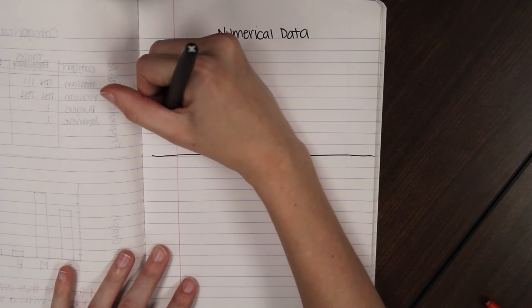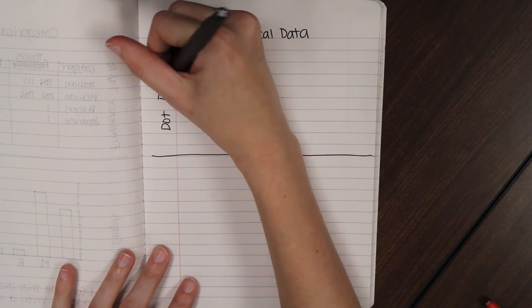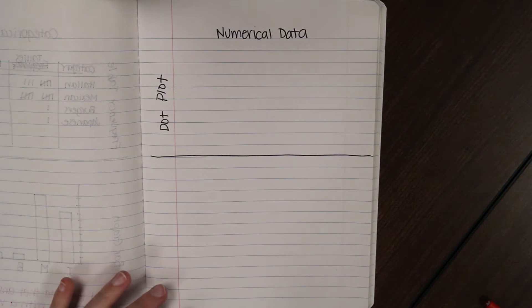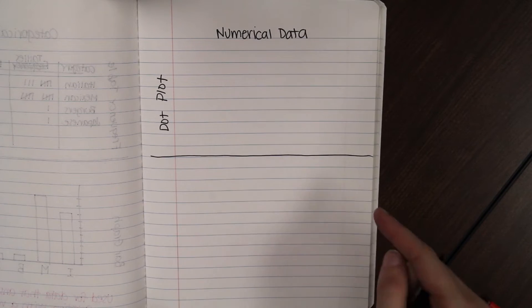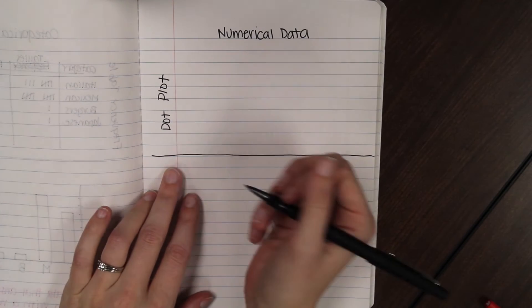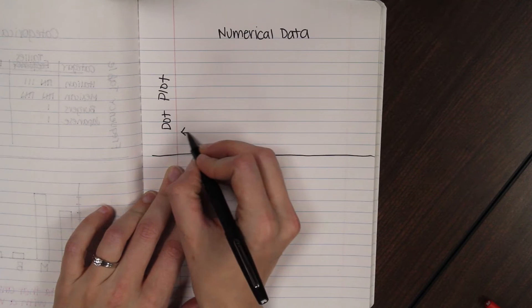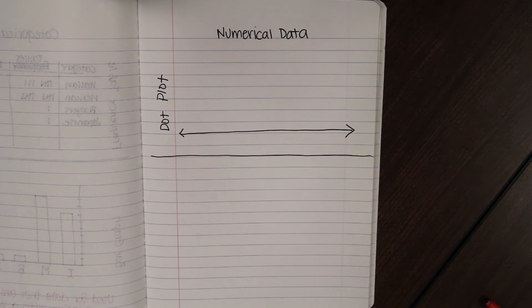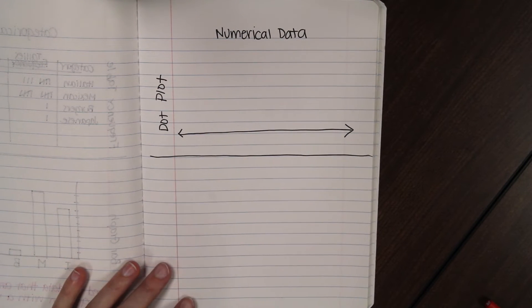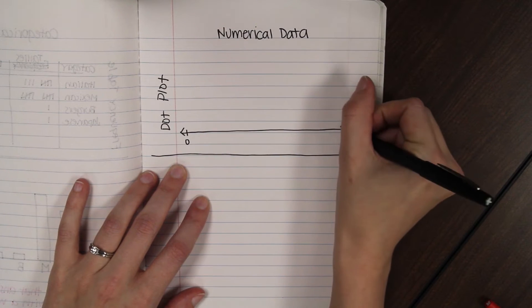The first one is a dot plot. So, dot plot is a lot like a bar graph or a pictograph, but instead of having categories across the bottom that are words, like Italian, Mexican, burgers, and Japanese, we're going to have numbers across the bottom, because it's a number line. So, we'll draw a number line across the bottom. And we're going to use the data that Leah asked our teachers about the number of concerts they've been to. So, if we ignore Ms. Broughton's 5,217 concerts and Ms. Campos's 500 million concerts, then we're just going to do our number line from about zero to, like, 40.